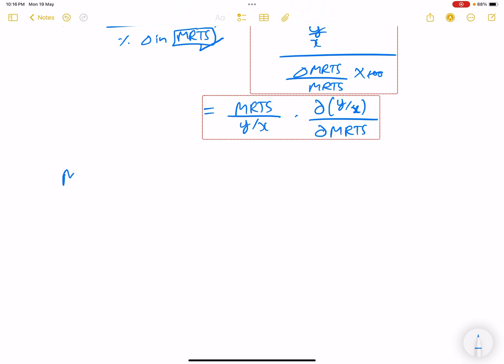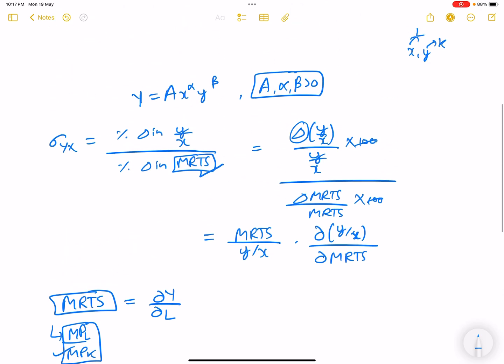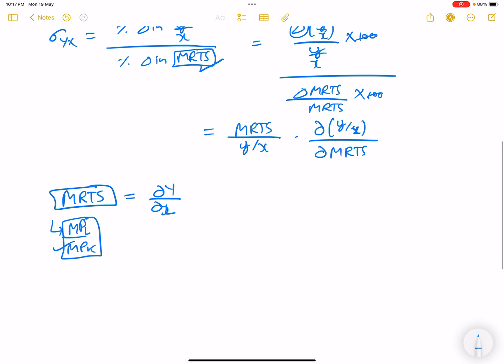And MRTS, we already know what marginal rate of technical substitution is. This equals MPL by MPK, marginal productivity of labor upon marginal productivity of capital. This is del y by del L. L was x in this case, so del y by del x upon del y by del y.